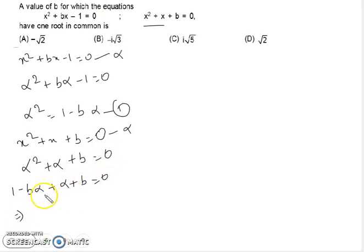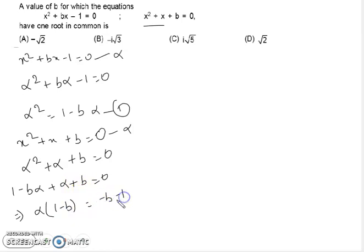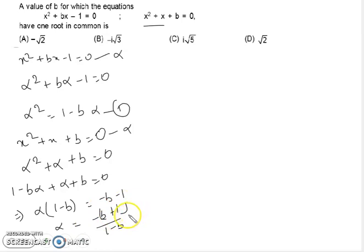After taking alpha as a common factor and rearranging, we get α(1 - b) + (b - 1) = 0, which simplifies to α(1 - b) = -(b - 1). Solving for alpha gives us α = -(b + 1)/(1 - b).